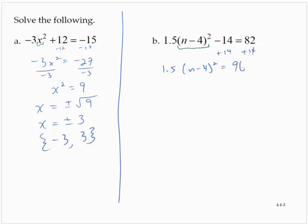I'm sorry, 96. Dividing through by the 1.5, n minus 4 squared is equal to 64.